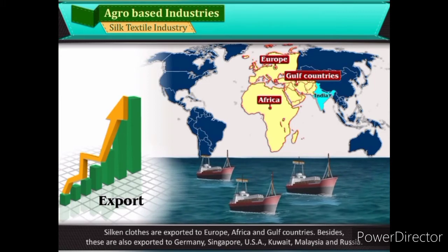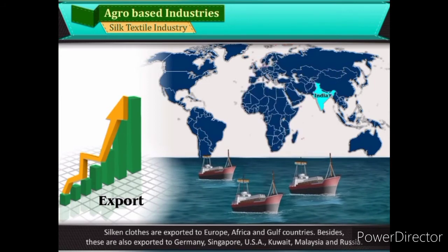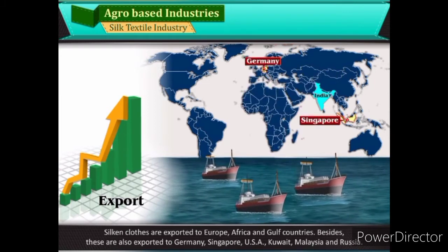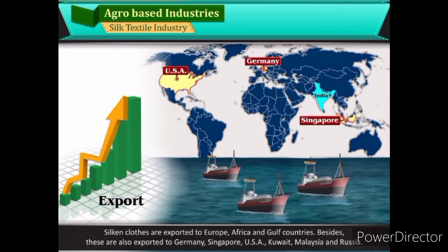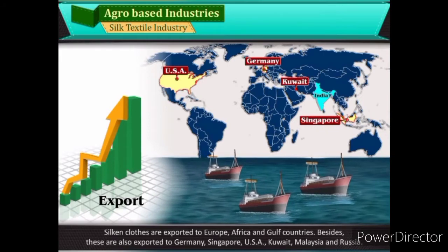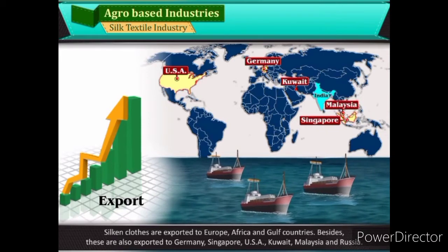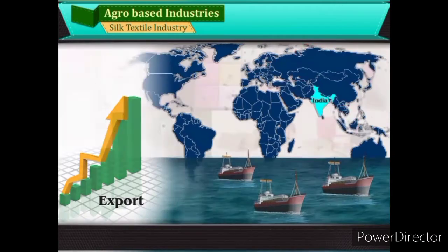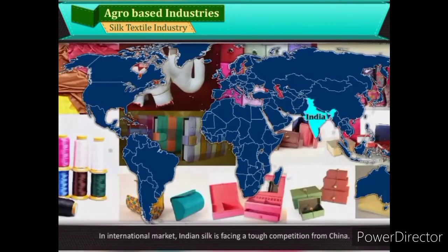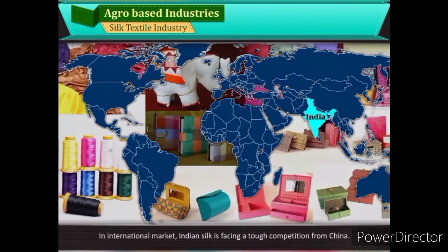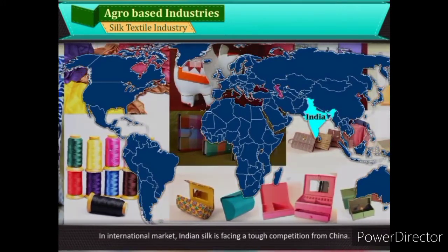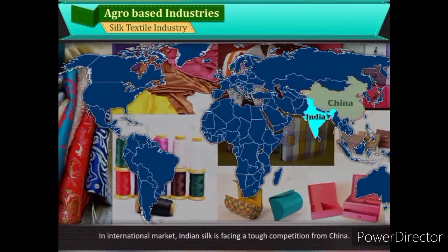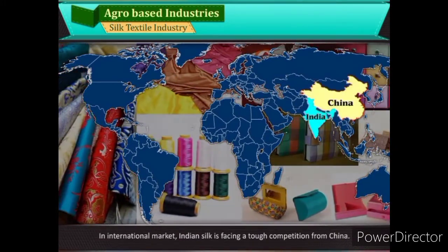Besides, silken clothes are also exported to Germany, Singapore, USA, Kuwait, Malaysia, and Russia. In the international market, Indian silk is facing tough competition from China.